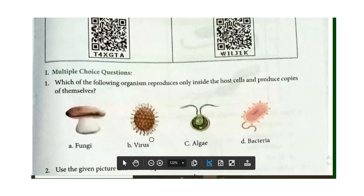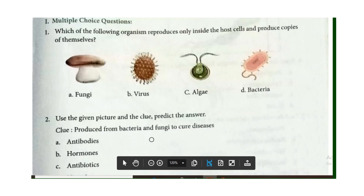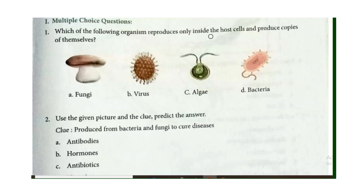First, Multiple Choice Questions. Which of the following organisms reproduces only inside the host cells and produces copies of themselves? Four organisms are given. The answer is Virus.